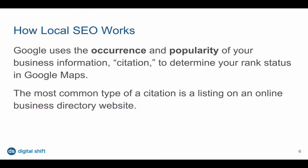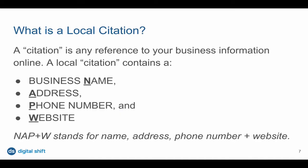So how does local SEO work? Google uses the occurrence of your business information, or citation, to determine how well you rank in Google Maps. The most common type of citation is a business directory listing on the web. A citation is the reference of your business information online, and it's not just limited to the business directory — it's any reference to your business name, address, phone number, and website. In our industry, that's referred to as NAP plus W: name, address, phone number, and website.